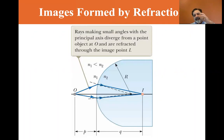You don't see this type of lens or glass, maybe a paperweight or something like that might do something like this. But here's an image formed by refraction. Rays making small angles with the principal axis diverge from a point object at O and are refracted through the image at point I.